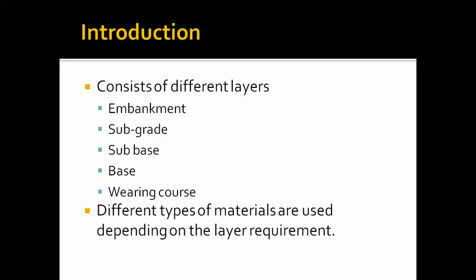Depending on the situation, we use different materials for the embankment, and we may also employ protective measures such as geotextiles and retaining walls. Above the embankment is the subgrade layer, which is the bottommost pavement layer. Its purpose is to safely transfer loads from the above layers to the natural ground surface. It is normally made of soil.